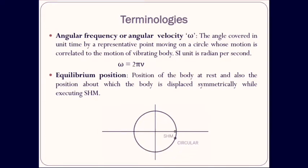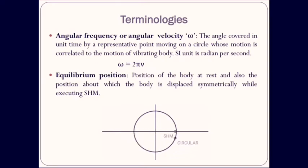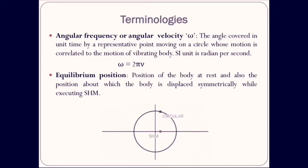The equilibrium position can be defined as the position of the body at rest, and also the position about which the body is displaced symmetrically while executing simple harmonic motion. For example, if you consider a simple pendulum, if the bob is at rest that position is called the equilibrium position, or if it is undergoing oscillations, it is the position about which the bob is displaced symmetrically on either side.